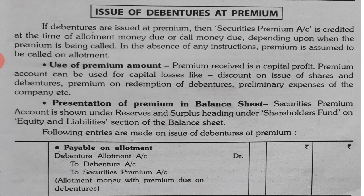Since it is a Capital Profit, the use of this Security Premium can only be done at the time of Capital Losses, not for other things. This is a Reserve of the Company, therefore in the Balance Sheet of the Company, it will be shown under the Reserve and Surplus heading, under Shareholder Fund on the Equity and Liability Section of the Balance Sheet.